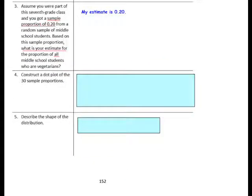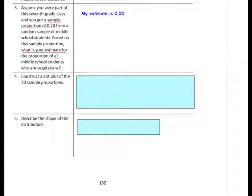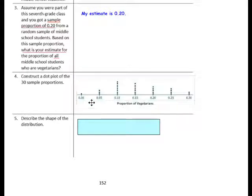Question 4: Construct a dot plot of the 30 sample proportions. Label your number line 0 through 0.30 at increments of 5 hundredths — 0.05, 0.10, 0.15, 0.20, and so on — then dot each number from the previous page. Here's what your dot plot should look like; double check it to make sure it is correct.